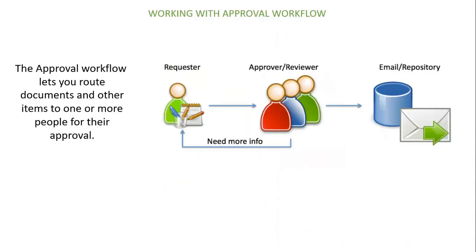In this diagram you can typically see all the players involved in the working of an approval workflow. The approval workflow starts with a requester who is part of a process and initiates the workflow. As part of this, the requester sends certain documents and information to the second player in the approval workflow, which is the approver or reviewer.